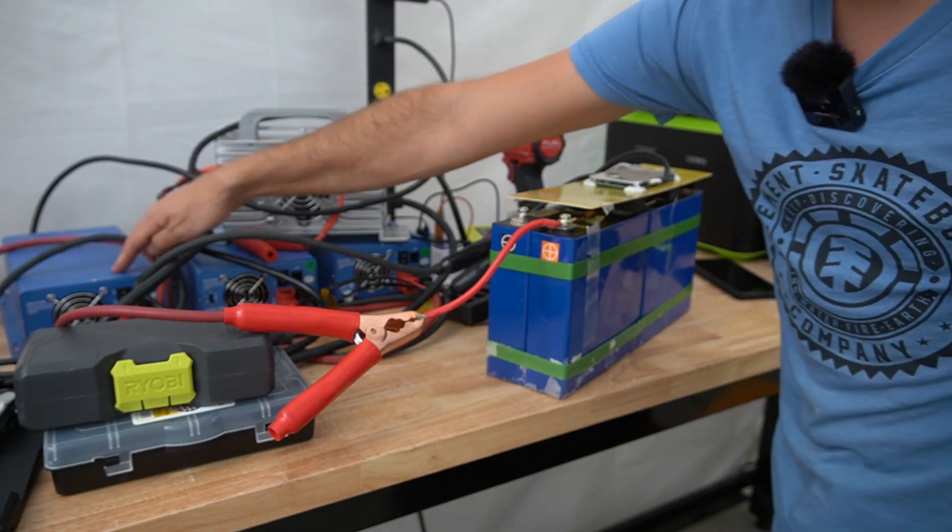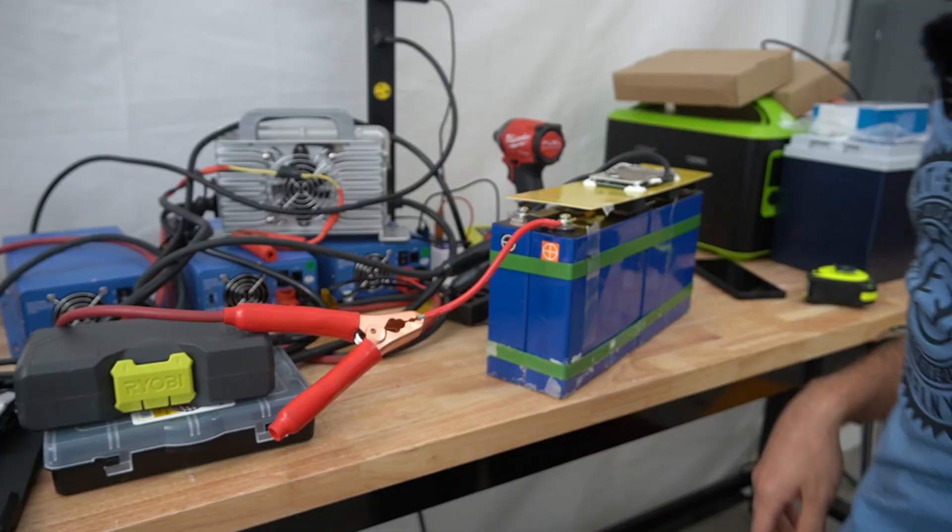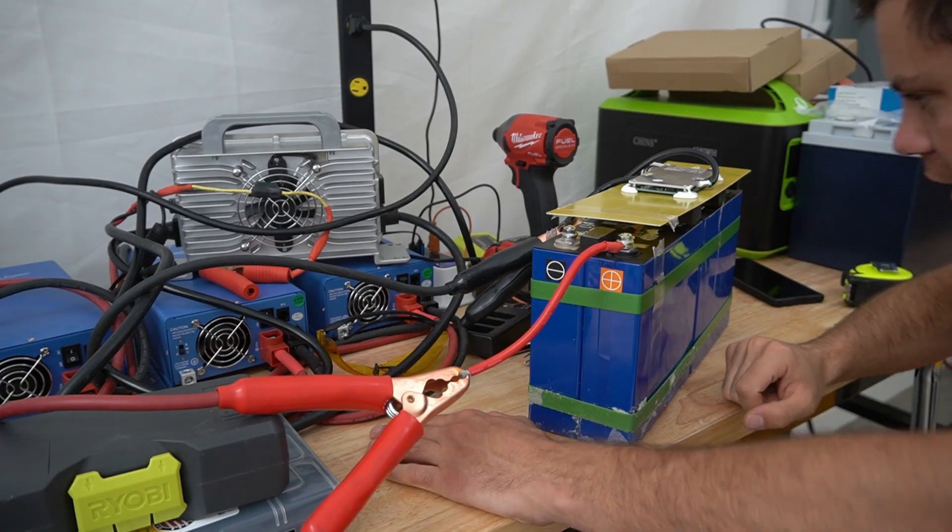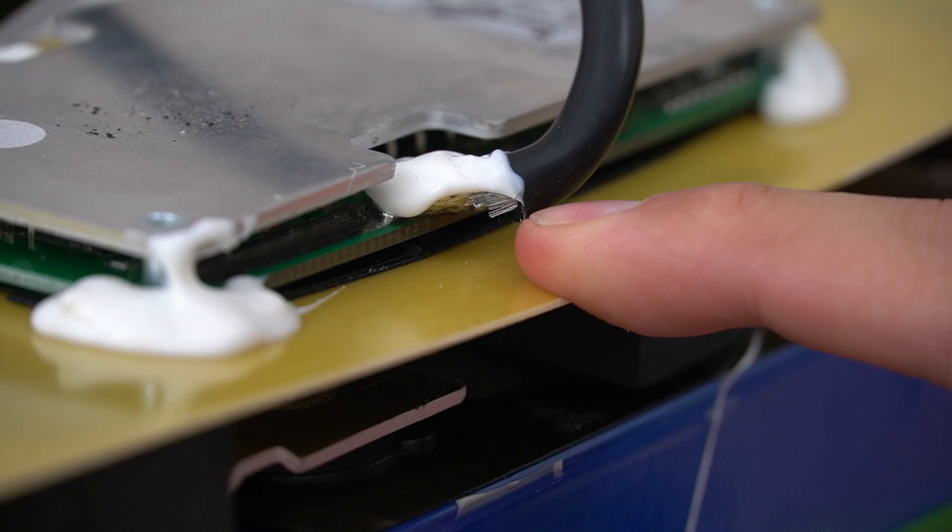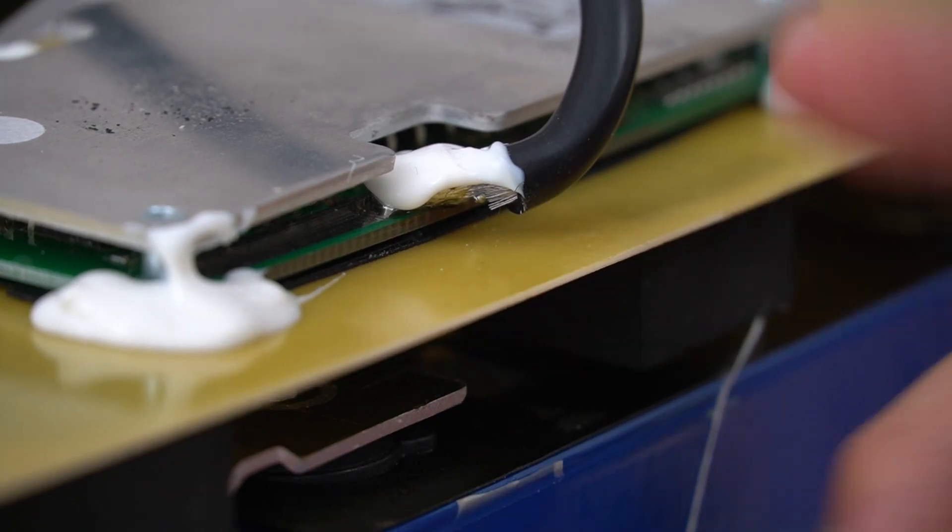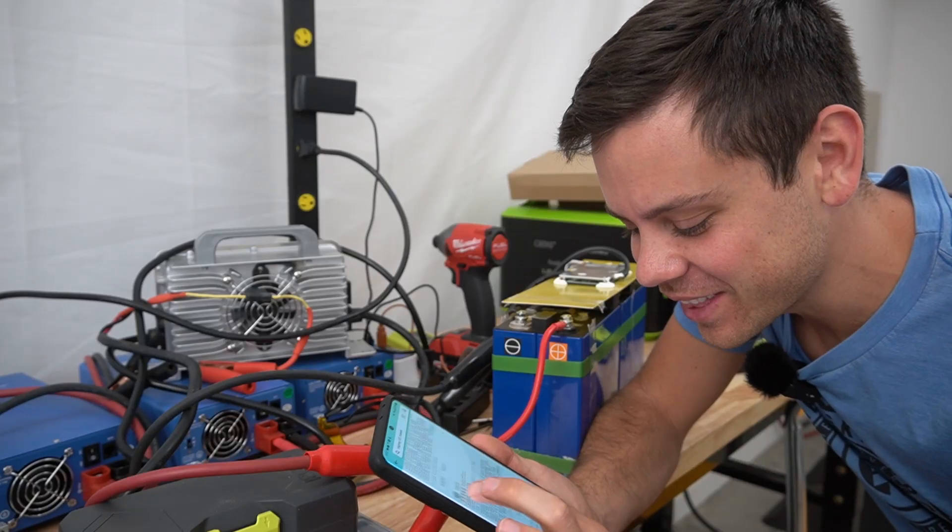Right now we have a 12 volt charger and it's charging up to 100%. I also noticed some bad soldering. Check this out. On the battery connection on the BMS you'll notice that some of the wire strands are sticking out and that's awful. That's bad. What the heck?